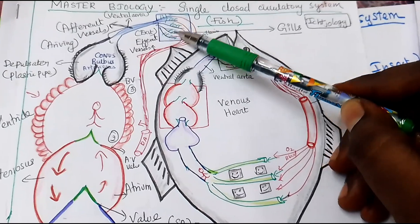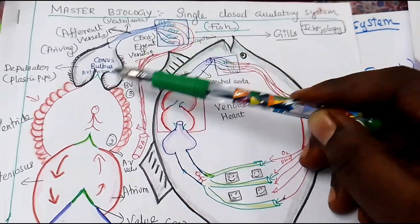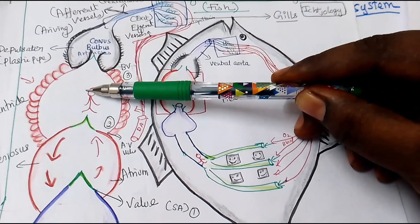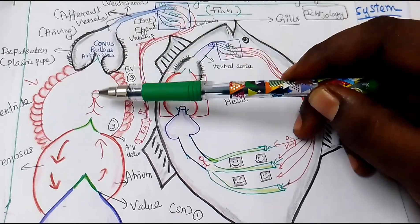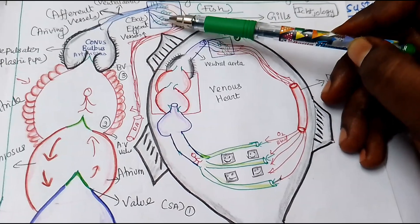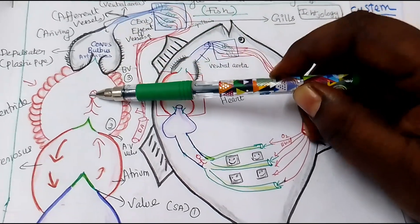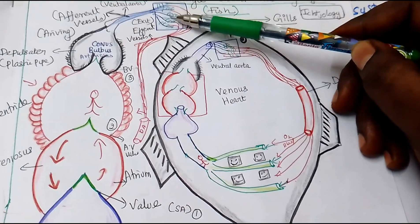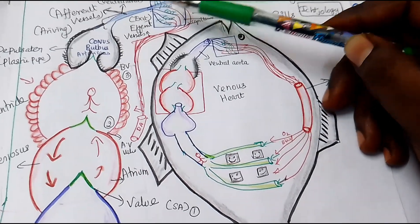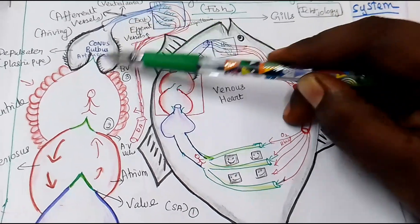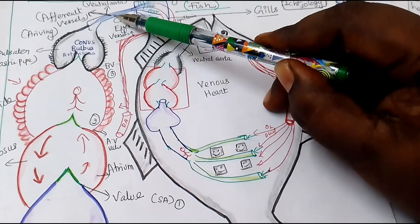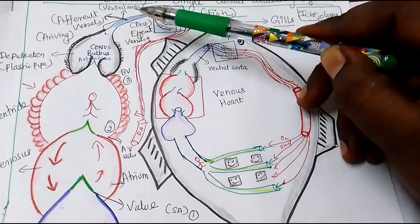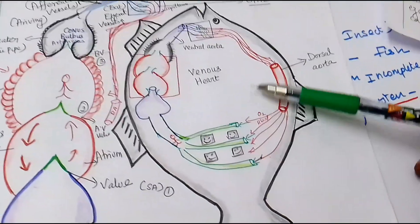From the ventral aorta, blood goes to a gill-like structure which acts as the lungs of the fish. This apparatus is present between the ventricle and the gills because the capillaries of the fish are very thin — if pressure went directly, the capillaries could be damaged. The conus arteriosus reduces the pressure. The flow then passes through afferent vessels into the gill apparatus.